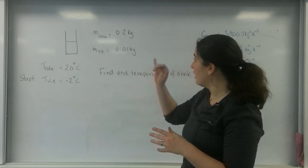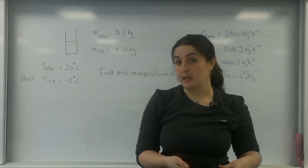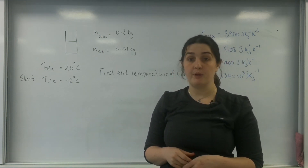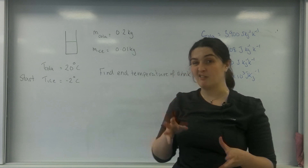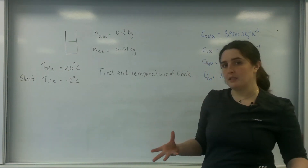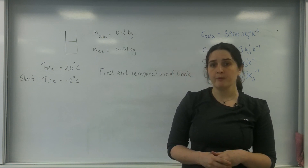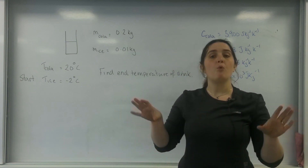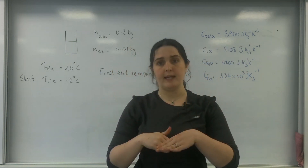I've got a glass of cola that is 0.2 kilograms and I'm going to put some ice in — 0.01 kilograms, so 10 grams. The cola started at 20 degrees C and the ice started at minus 2. Once the ice is all melted, I want to know what the lowest temperature of my drink will be.